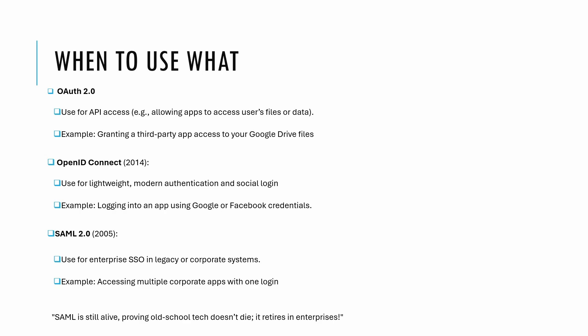Here's a guide for choosing the right protocol based on your needs. Use OAuth 2.0 for API access — for example, if a third-party app wants to upload files to your Google Drive, OAuth ensures it gets the right permissions without needing your password. Use OIDC for authentication and modern social logins; it's a great fit for web and mobile applications, like logging into Instagram using your Facebook account. SAML 2.0 is a bit old, but it's perfect for enterprise SSO in environments with both legacy and modern systems — think an employee logging into multiple corporate apps with one set of credentials. In short: OAuth is for APIs, OIDC is for authentication and authorization, and SAML is for enterprise board-room-style SSO.